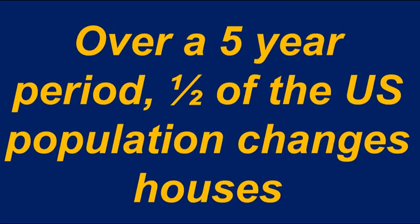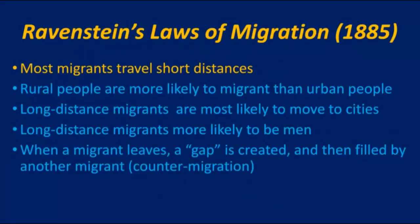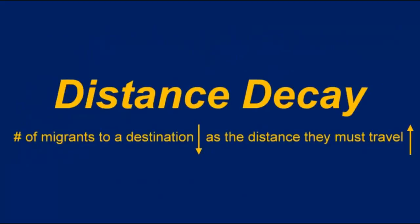Over a five-year period, half the country will have a new address, with the typical US American averaging about 14 addresses over his or her lifetime. Returning to Ravenstein's laws of migration, we focus on the first one: most migrants travel short distances. This relates to the key term distance decay, which argues that the number of migrants to a destination decreases as the distance they must travel increases. Someone is more likely to migrate from Indianapolis to Chicago than Indianapolis to London because Chicago is closer.